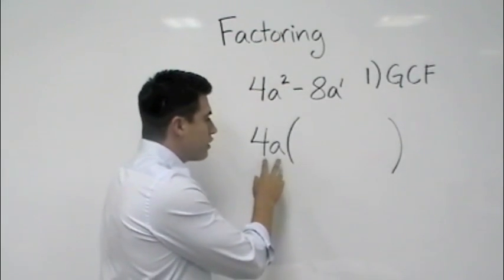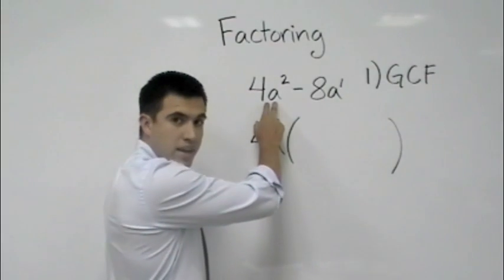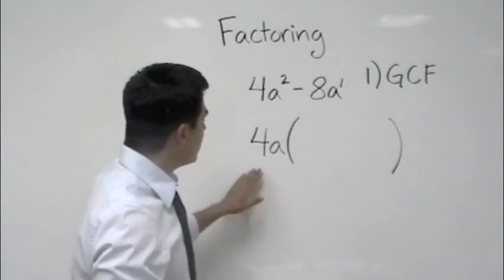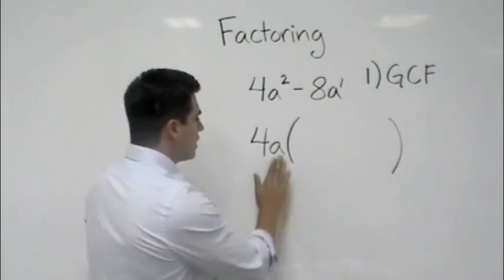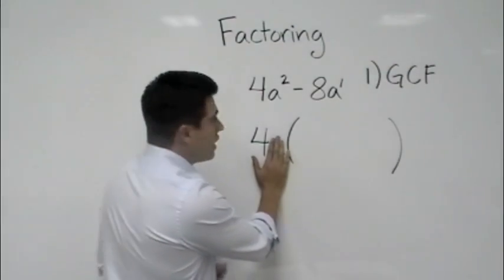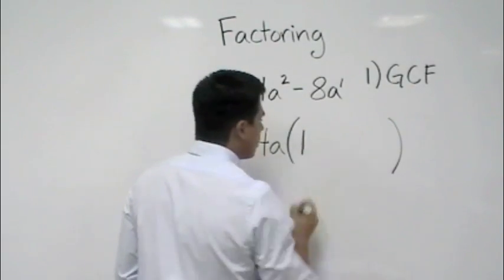We're going to ask ourselves: 4a times what will give me 4a²? Let's do that. We have 4a times... well, let's look at the numbers and see. 4 times what gives me 4? We know that's 1, so we'll put a 1 there.